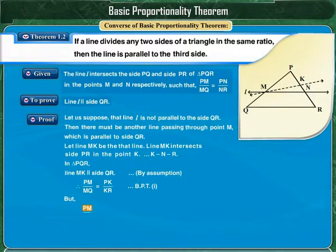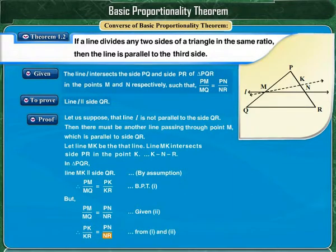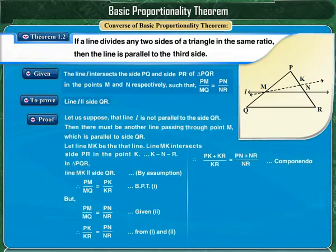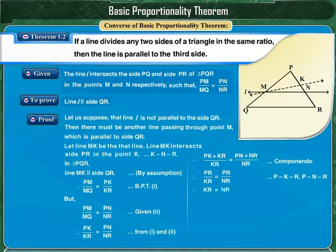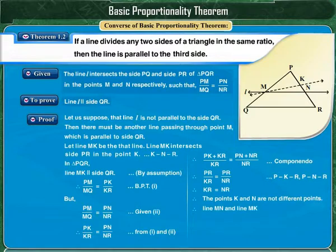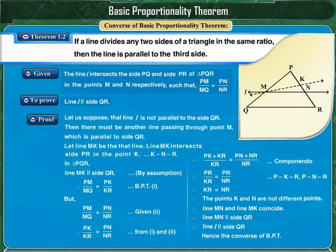But it is given that PM upon MQ is equal to PN upon NR. That means PK upon KR is equal to PN upon NR. By componendo, PK plus KR upon KR is equal to PN plus NR upon NR. Since points K and N lie between points P and R, we get PR upon KR is equal to PR upon NR. Therefore KR is equal to NR — meaning points K and N are not different points. Therefore line MN and line MK coincide, so line MN is parallel to side QR. That is, line L is parallel to side QR. Hence, the converse of the basic proportionality theorem is proved.